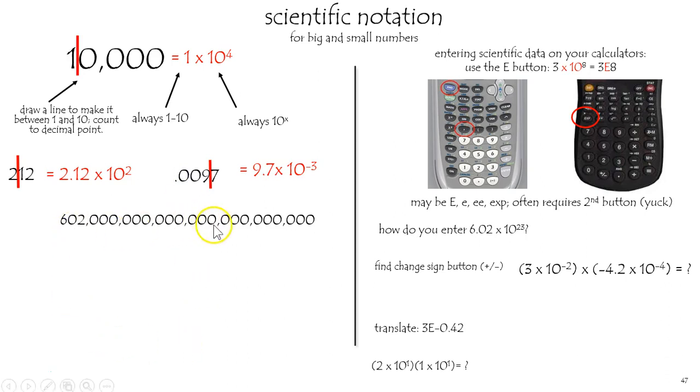Here's a giant number. This is known as Avogadro's number. And when you make that between 1 and 10, 6.02, you see 23 digits to the decimal place. Therefore, Avogadro's number is 6.02 times 10 to the 23rd.